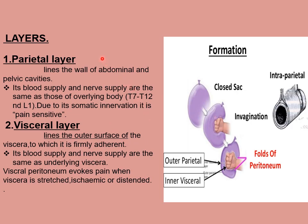Peritoneum is in the form of a closed sac which is invaginated by a number of viscera. As a result, it is divided into two layers: an outer or parietal layer and an inner or visceral layer. To make it more clear, here is an example: if we assume this inflated balloon is the peritoneum, a closed sac, and then we push the fist against this balloon, this shows you the invagination of the organs. You can see that the peritoneum is divided into two layers — an inner or visceral layer which surrounds the fist or viscera, and an outer or parietal layer which lines the abdominal and pelvic cavities. In between these two layers, this cavity is called the peritoneal cavity.